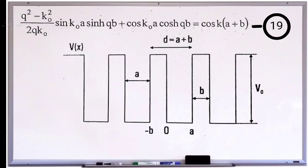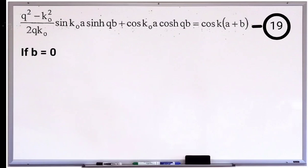In our case, suppose the barrier thickness is near to zero or negligible. If b is zero, then sinh qb term will be qb and cosh qb will be 1.